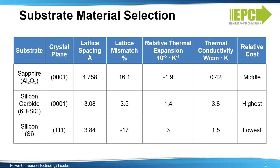Silicon carbide, on the other hand, has a reasonably good lattice match and excellent thermal conductivity. The disadvantage of silicon carbide is the cost of the starting crystal substrate, which can be up to 100 times the cost of a silicon substrate of the same diameter.